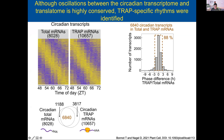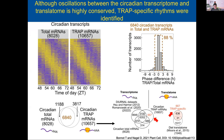When we compare the transcriptome and translatome, we observed a subset of transcripts that appears to be specific — meaning they're only oscillating at the translatome level in our studies and in all other studies we've compared to. Many of them seem to be involved in cell cycle regulation.